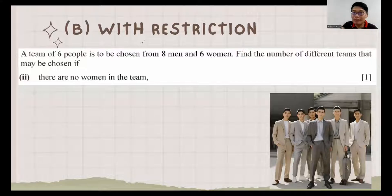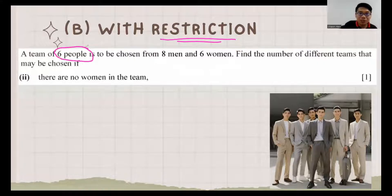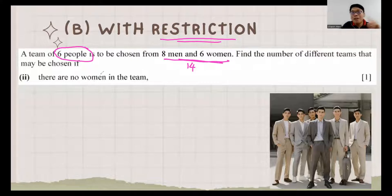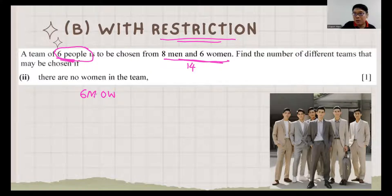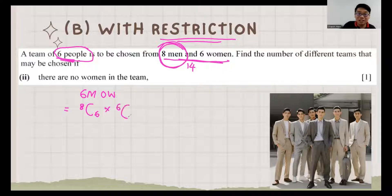After the non-restriction situation, we go to the restriction situation. They want 6 people chosen from 8 men and 6 women. Find the number of different teams if there are no women in the team. No women means all 6 people are men. We choose 6 from the 8 men, so it's 8C6. For women, 6C0 equals 1. The answer is 28.